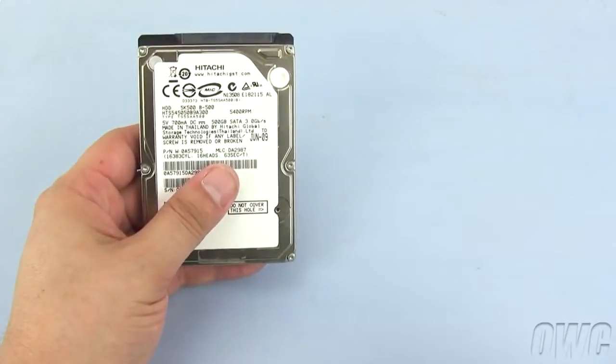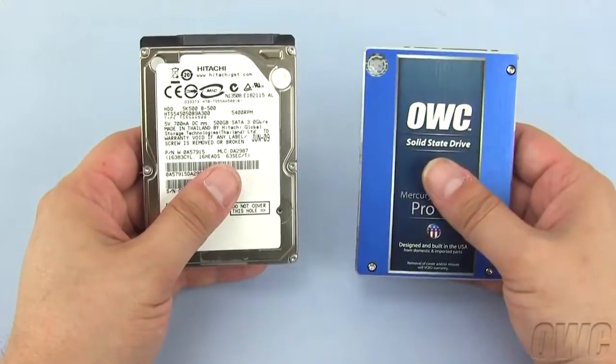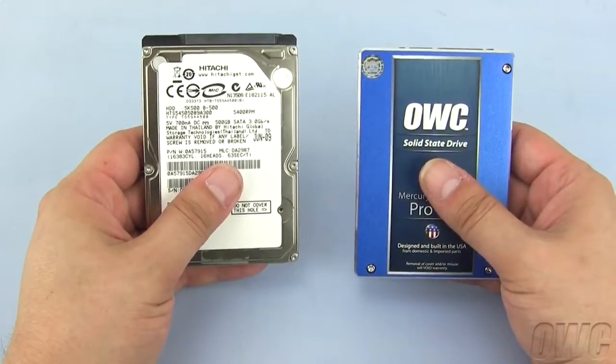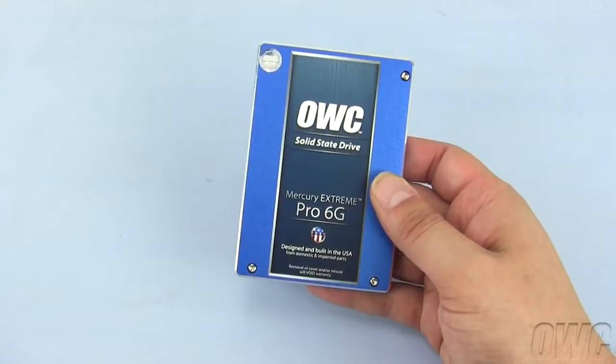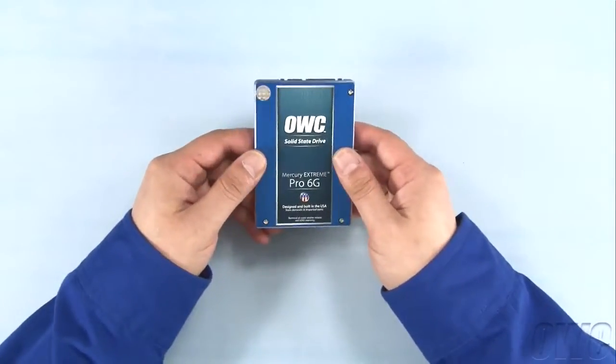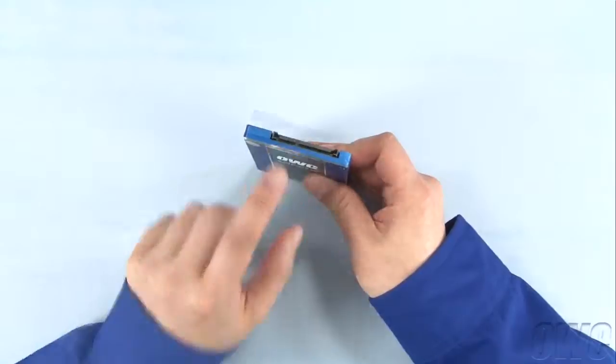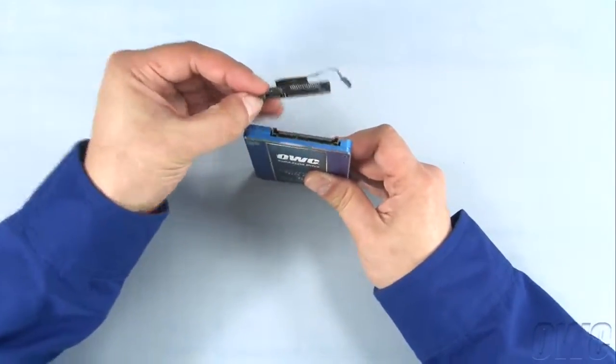You can install either a 2.5-inch SATA hard drive or solid-state drive in the Mac Mini. For this installment, we'll be using an OWC Mercury Extreme Pro 6G SSD. First, line up the SATA connector on the drive with the SATA cables connection and slide the two together.